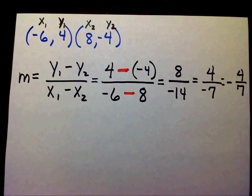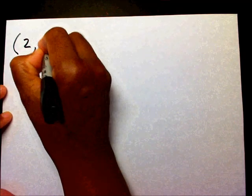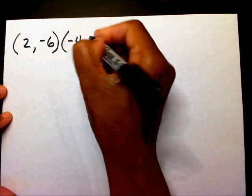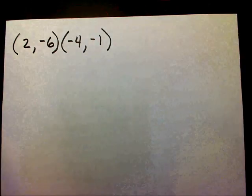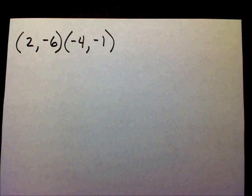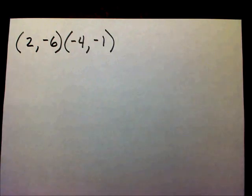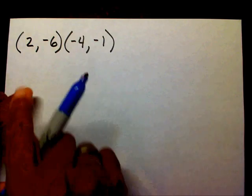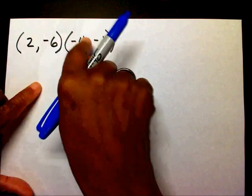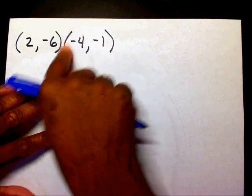Let's try another one. Let's try (2, negative 6) and (negative 4, negative 1) — all those negatives. Please pause the video and try this one. The first thing you want to do when finding the slope using two points is label your X's and Y's. This is my first set and this is my second set — or I can make this my first set and this my second set. It does not matter, as long as you keep set 1 with set 1 and set 2 with set 2.